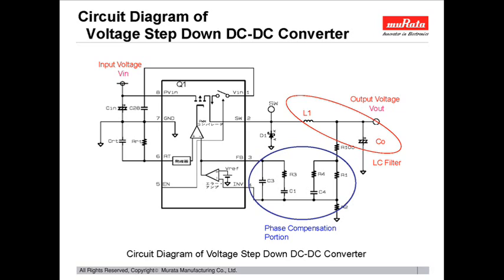This is a circuit diagram of a general voltage step-down type DC-DC converter. The capacitor for the smoothing output side in the figure is replaced with three types of capacitors, and the ripple waveform is monitored.